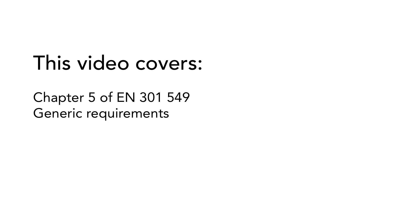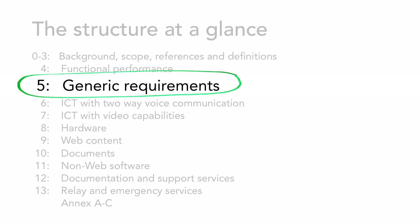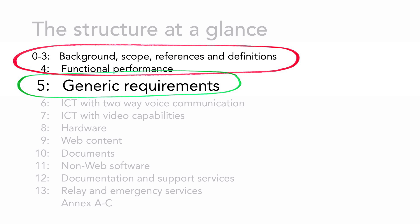In this video we are going to look closer at the first chapter with technical requirements in the EN 301 549, chapter 5. This chapter covers generic requirements. Remember that this is just one part of the EN standard. You need to get familiar with all technical requirements in the standard. To get an overview of the structure of the standard, we recommend that you watch video 3 in this series. It is also a good idea to watch video 4, which covers chapter 4. This will help you understand the user needs, also called functional statements.